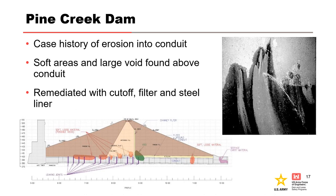Pine Creek Dam is a case history of erosion into the conduit. Soft areas with low blow counts and a large void were found above the conduit; the figure shows the location of the soft zones in red and the large void in green. The photo on the right shows leakage occurring into the conduit. The project was remediated with a cut-off wall above the conduit, a drilled-in chimney filter, a downstream conduit perimeter filter, and a new steel conduit liner.